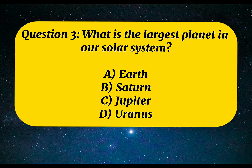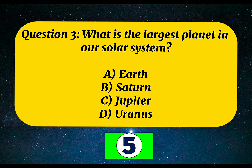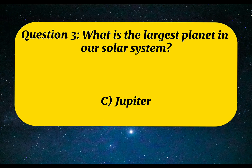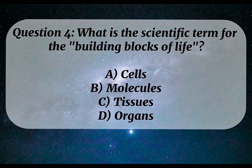Question 3. What is the largest planet in our solar system? A. Earth. B. Saturn. C. Jupiter. D. Uranus. Correct answer: C. Jupiter.